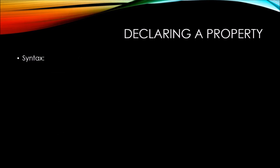Let's take a look at the syntax of a property. First, we have a class declared called myClass. Inside the scope, we're going to have a private variable. In this case, the private variable is of a data type of int. You'll notice that I named this private variable with an underscore to start the name. This is not required, but it is a best practice.